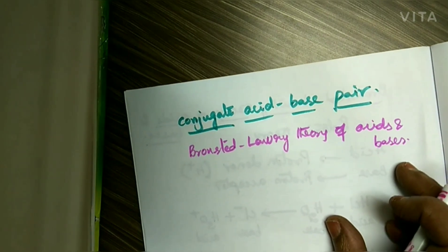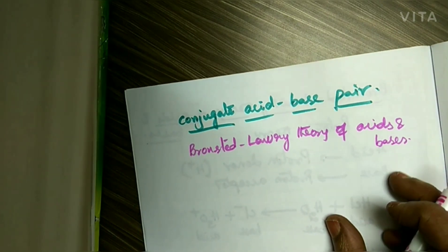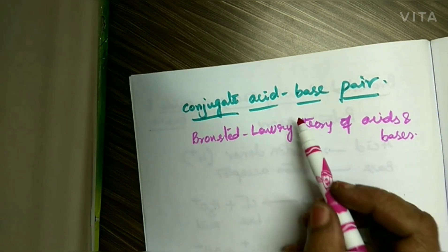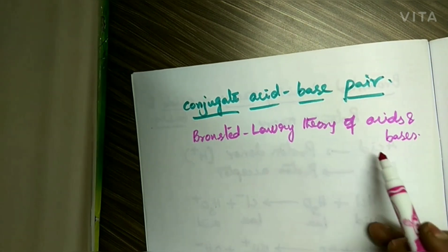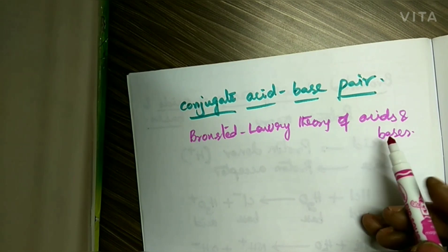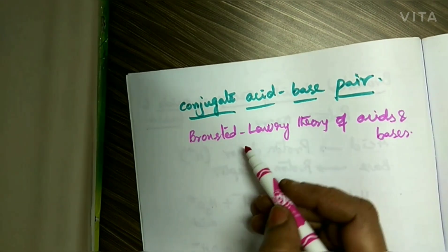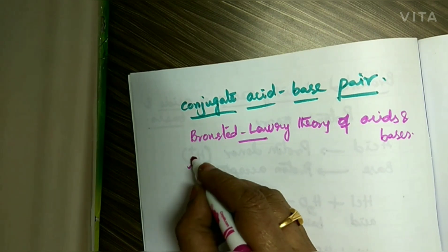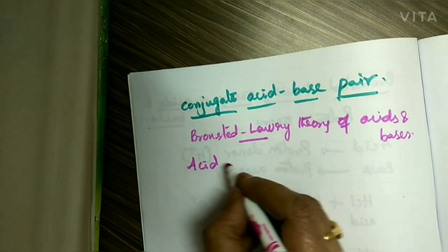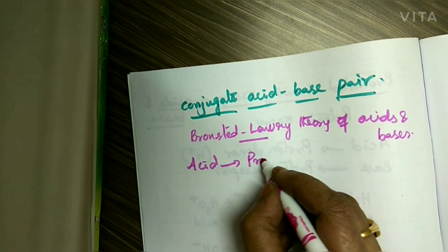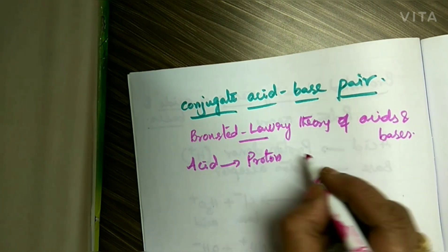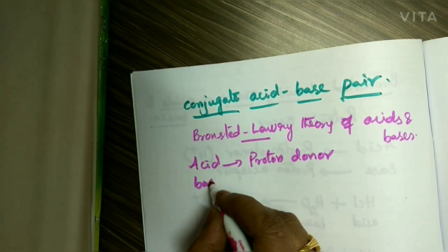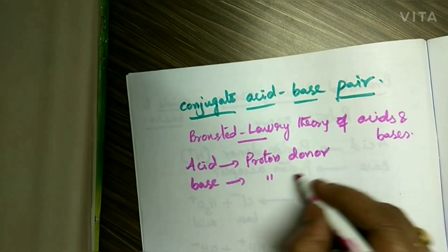Hello students. Today I am going to discuss about conjugate acid-base pair. This conjugate acid-base pair comes in Bronsted-Lowry theory of acids and bases. According to this theory, an acid is a proton donor and a base is a proton acceptor.